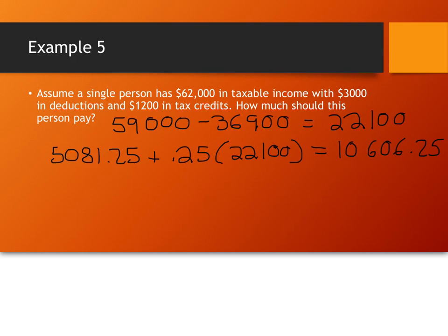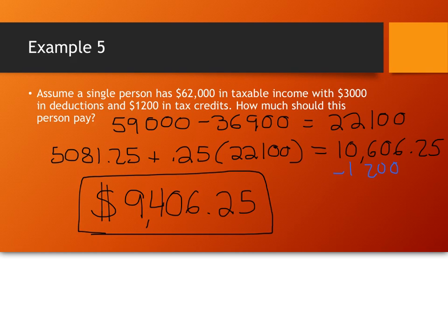Alright, now, we've took care of the deductions right up front. And so, now we have to take care of the tax credits. I have $1,200 in tax credits. So, that means my total amount that I have to pay is $9,406.25. That's the total amount that I would have to pay to the federal government in taxes. If that was me. Obviously, that's not me.